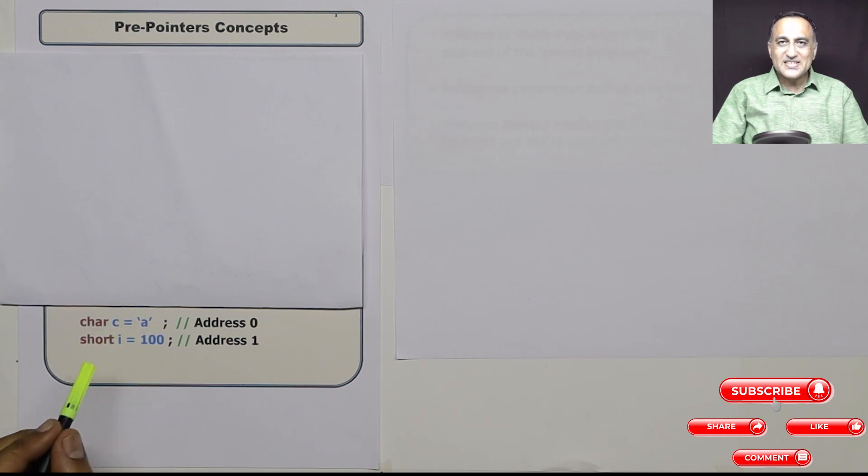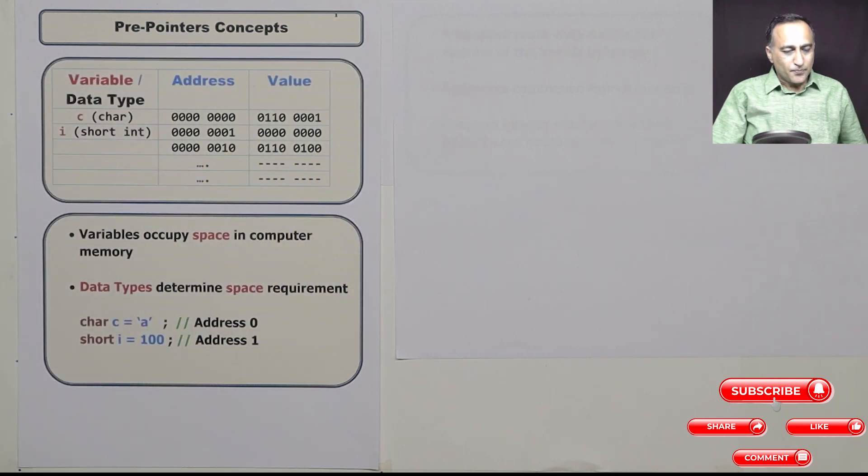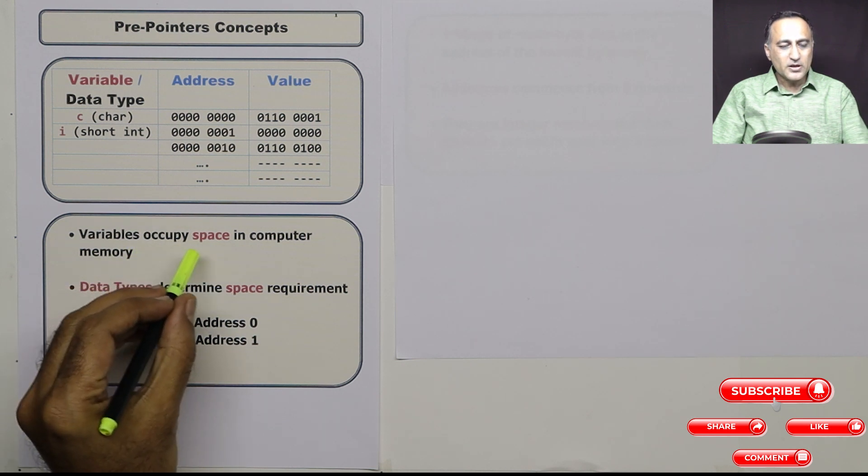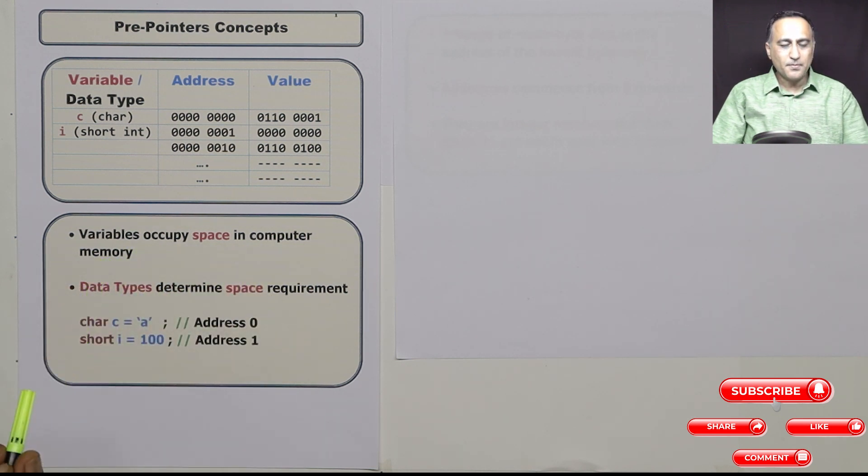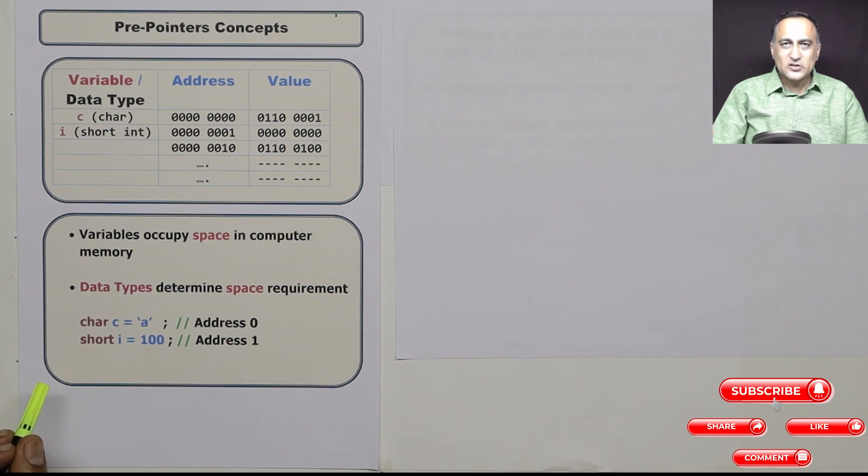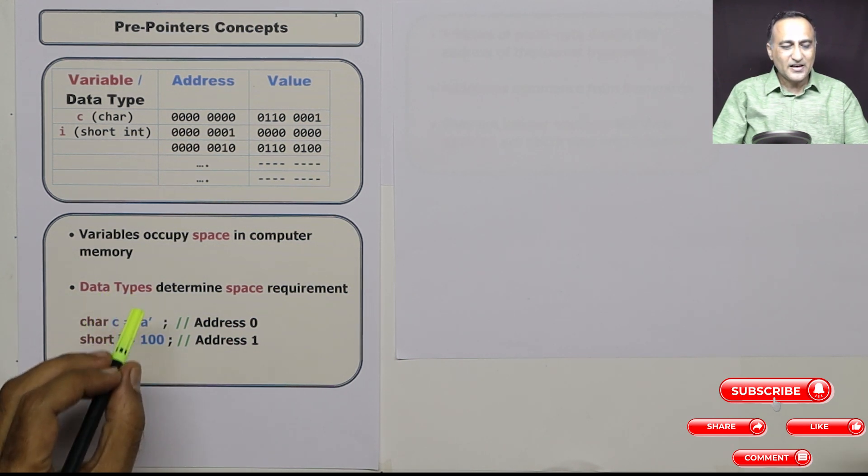Character is a single byte item, whereas short int is more than likely going to be composed of two bytes. So you need to understand that variables occupy space in a computer memory and the space occupied by variables is determined by their data types.